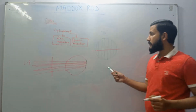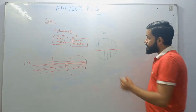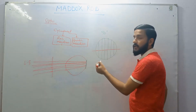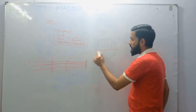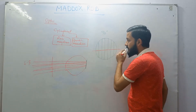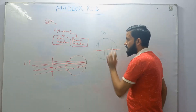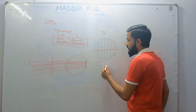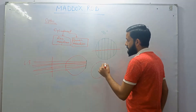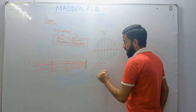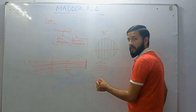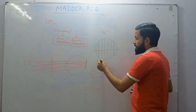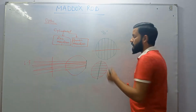An important point here is that when the Maddox rod is held vertical, the line image formed will be horizontal. Similarly, when the Maddox rod is held horizontal with the axis meridian at 0 degrees, a vertical line image will be formed.